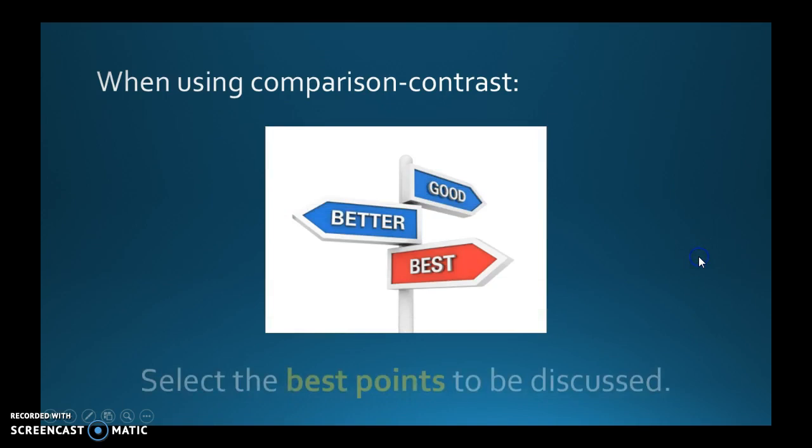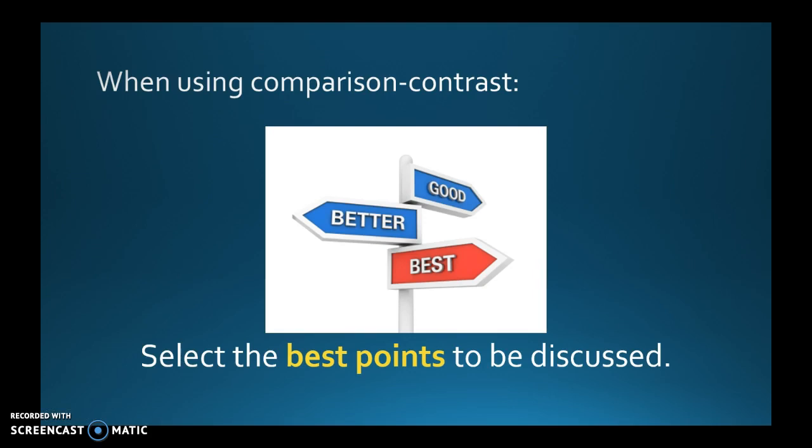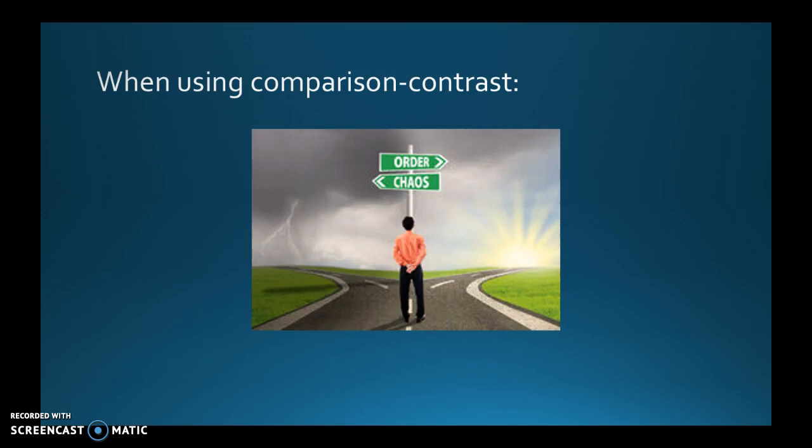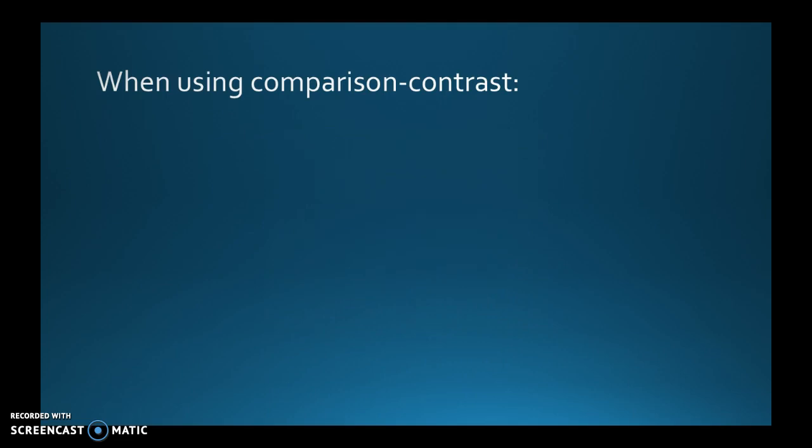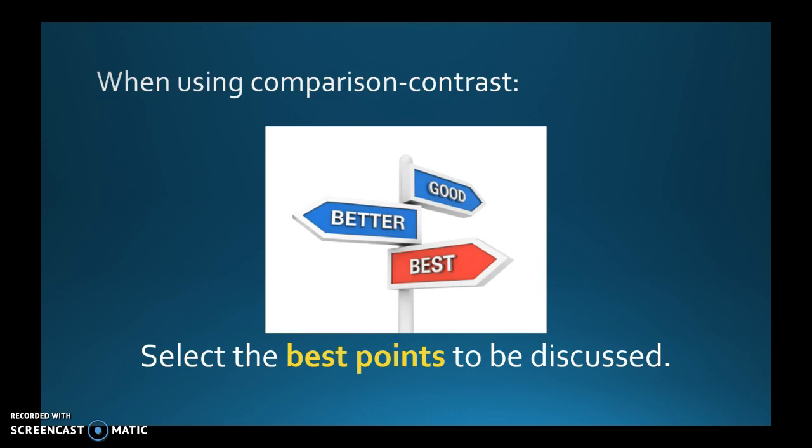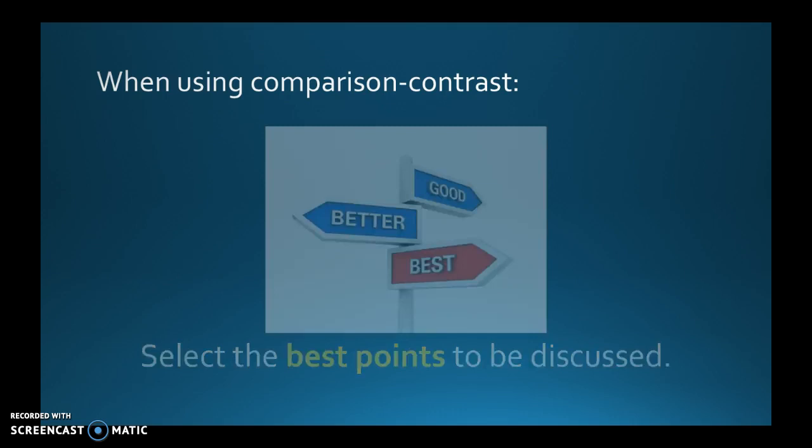When using comparison and contrast, make sure you select the best points to be discussed. If you're going to compare different things, make sure they're good points. For example, if you're comparing the Honda Accord and the Toyota Corolla, saying 'the Honda Accord is better because the knob on the stereo is brown instead of white' — is that really the best way to compare two cars, the color of the radio knob? No, not necessarily.